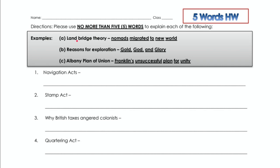Here are some exciting examples. If you were to explain the land bridge theory — note, I do not want you to explain the land bridge theory — but if you were, you could say: 'Nomads migrated to new world.' Five words or less. You strip it down to just the basics. Reasons for exploration? Easy: Gold, God, and glory. Four words. Boom. Albany Plan for Union? Franklin's unsuccessful plan for unity. Five words or less.